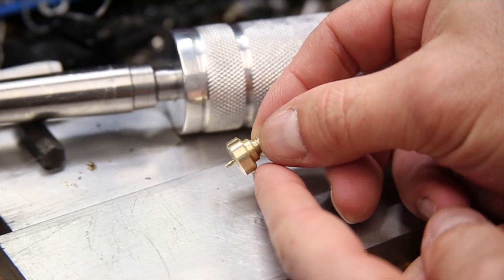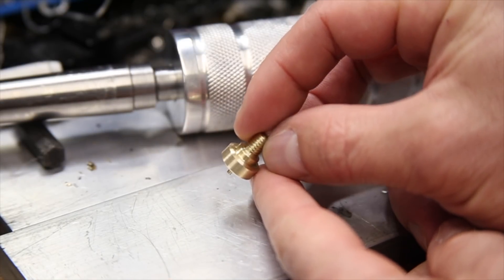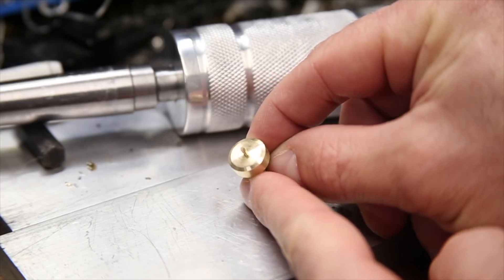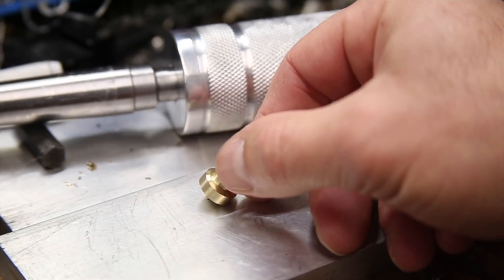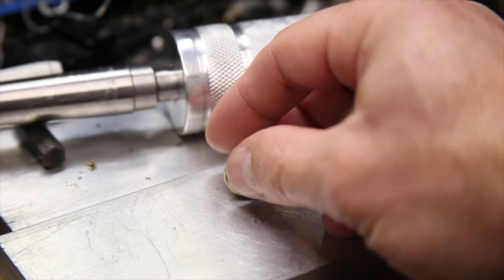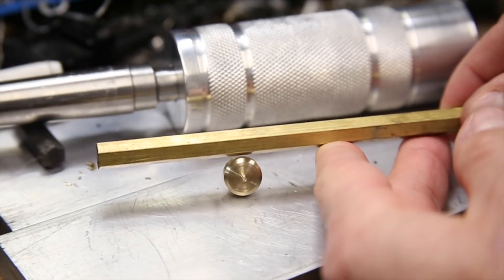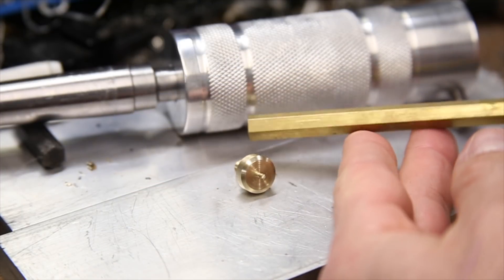At this point I would normally just put the threads in the chuck or hold the part in the die to do one last facing cut and the final sanding. But since I'm going to be making a jig using some of the 8mm hex stock anyway, I decided to just go ahead and make the jig now.